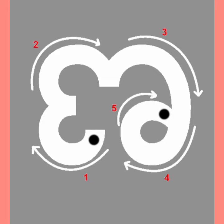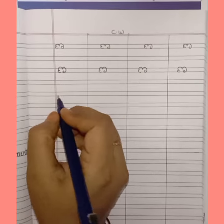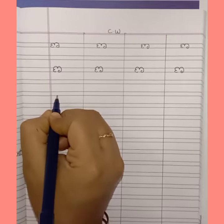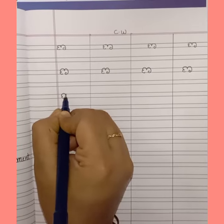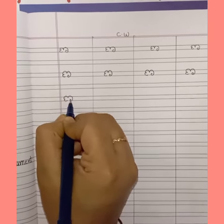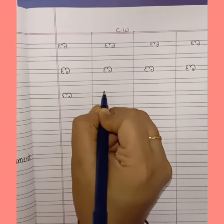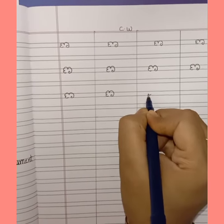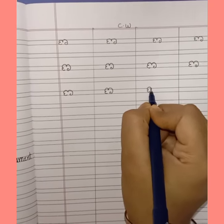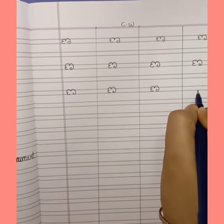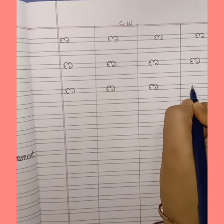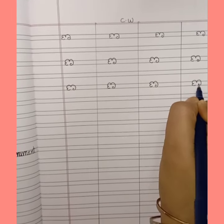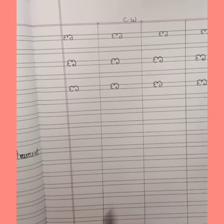Now, see carefully on the screen how to write the letter Ana with the help of arrow marks. See, children, how I am writing the letter Ana. This is Ana letter. Ana veena — a musical instrument.